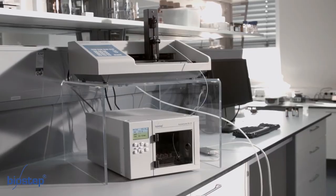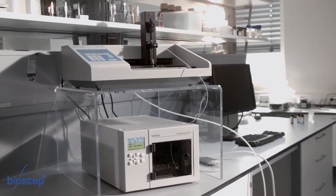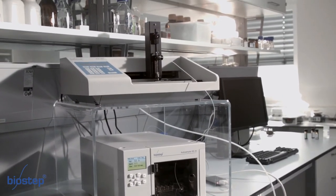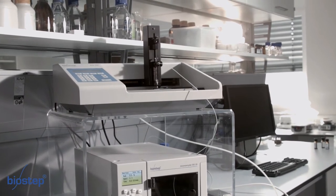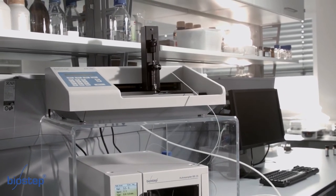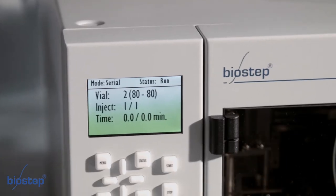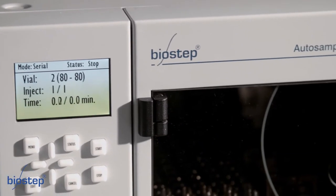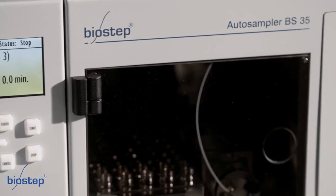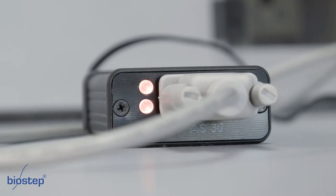Here you can see the space-saving arrangement of the instruments. On top is the HPTLC applicator AS30, sitting on an acrylic rack. Below there is the auto-sampler BS35. The communication between both instruments is carried out by an interface box.